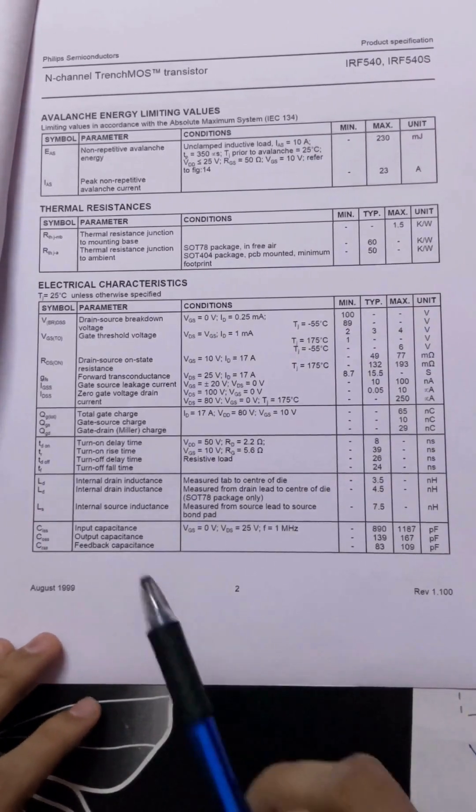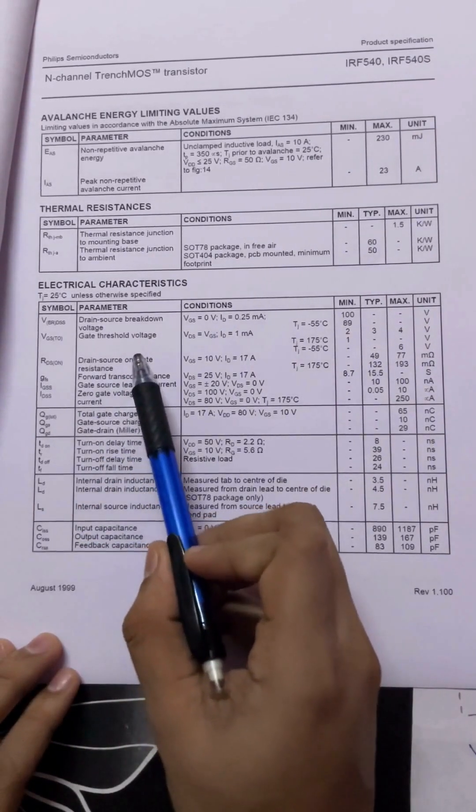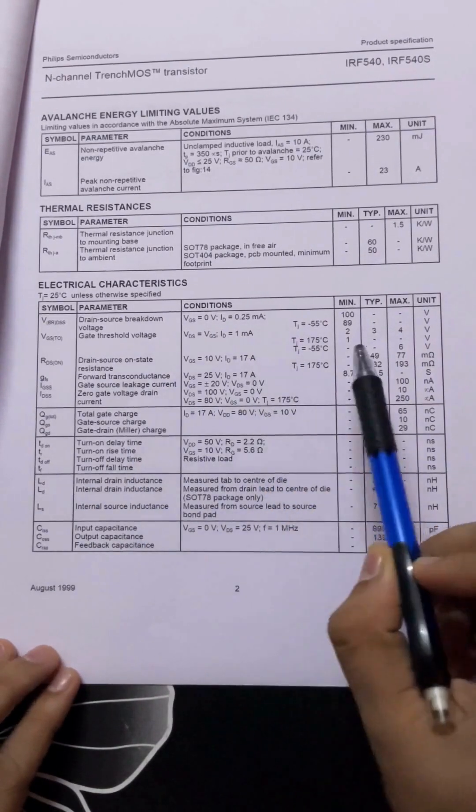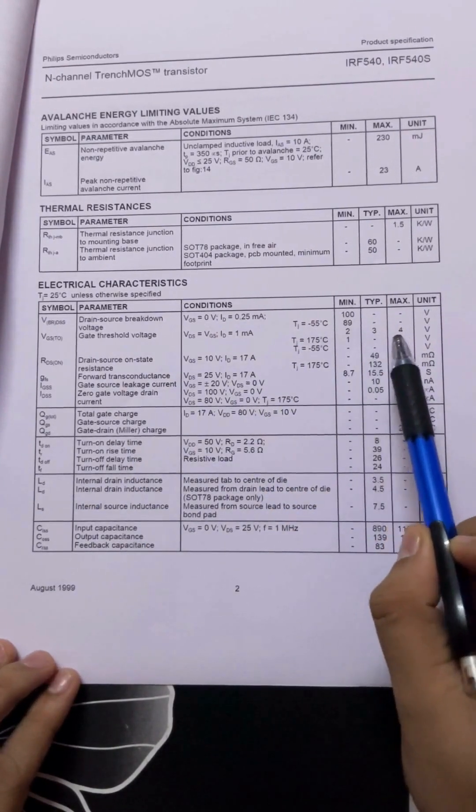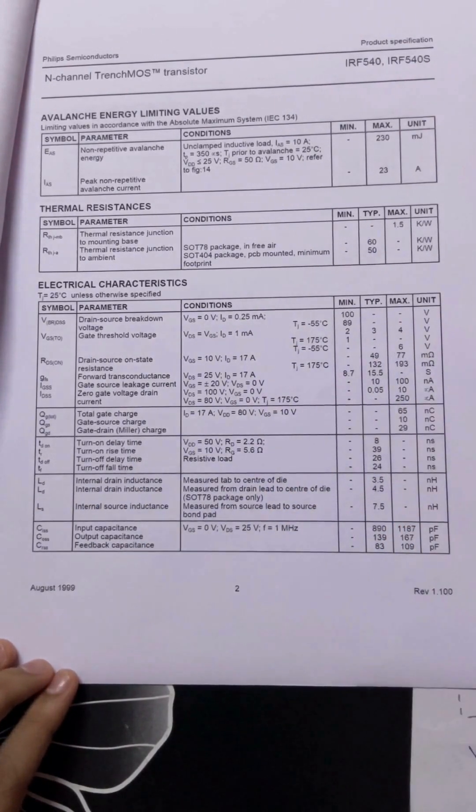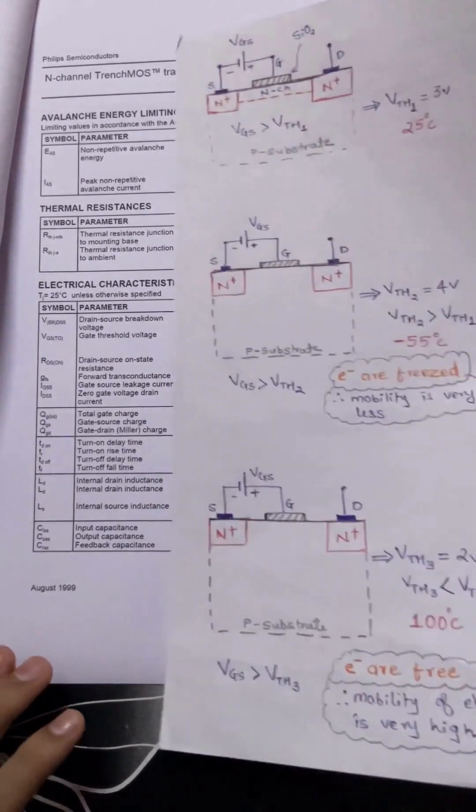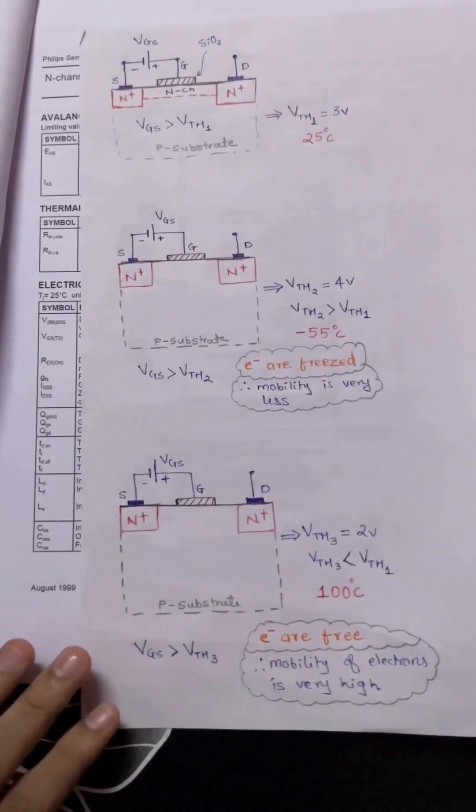Hello engineers, welcome to the new short video. In the previous short video we saw that the gate threshold voltage for n-channel MOSFET has around three different values: 2 volts, 3 volts, and 4 volts - that is minimum, typical, and maximum value. In this particular short video we are going to see why exactly it has three different values.